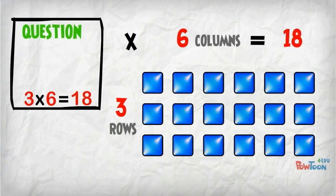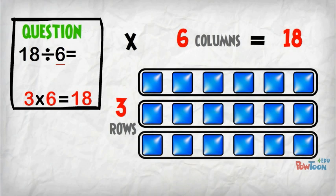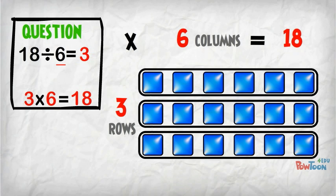If we have the question 18 divided by 6, we are making groups of 6. 18 divided by 6 is 3.